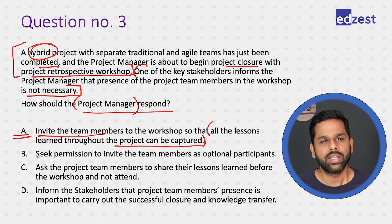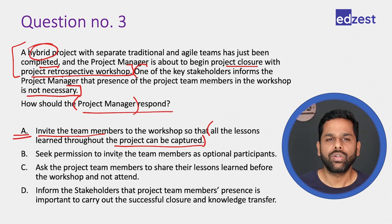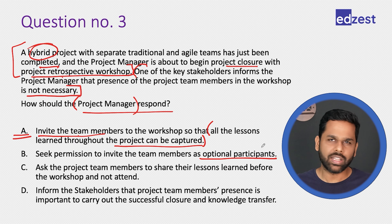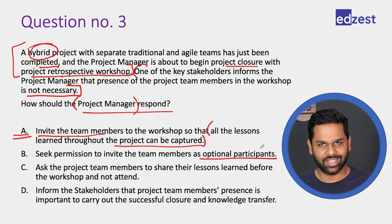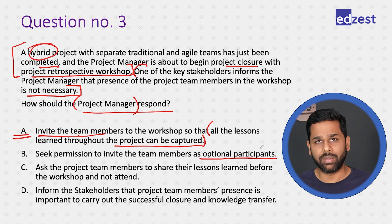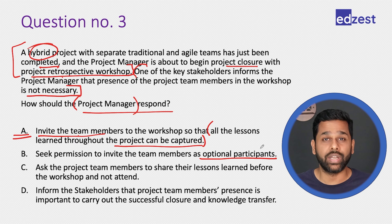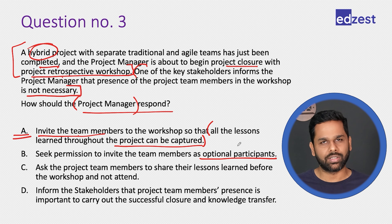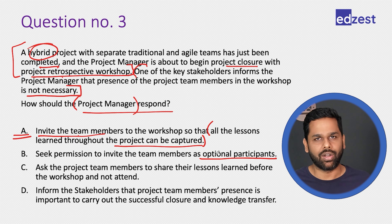Option B: seek permission to invite the team members as optional participants. This is not helpful. Either they should be present or they should not. If somebody is informing us not to call them, we will tell them we need them or we don't — we cannot say it is optional. Not a good choice at all.